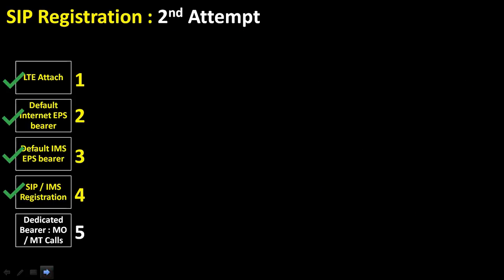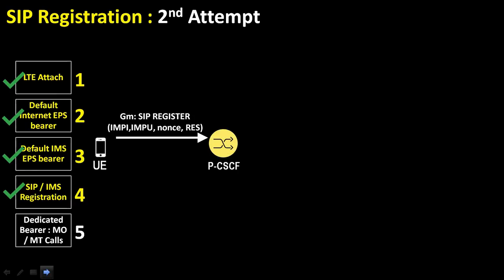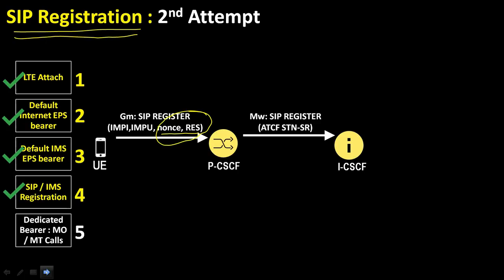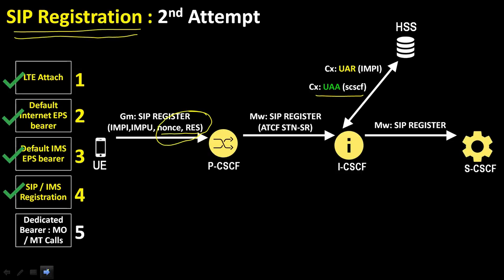The UE now sends a second SIP REGISTER request. The UE creates a temporary set of security associations based on parameters received from the P-CSCF and sends a new REGISTER request with a populated authorization header containing the RES, indicating the message is integrity protected. The P-CSCF checks the temporary security associations and verifies the security-related information, then forwards the SIP REGISTER to the I-CSCF with the RES included. The I-CSCF uses a User Authorization Request (UAR) to retrieve the S-CSCF name from the HSS and forwards the request to the relevant S-CSCF.